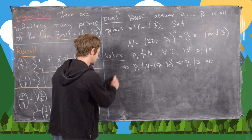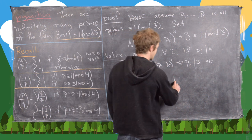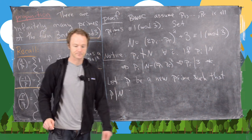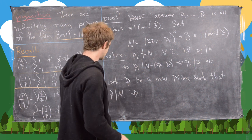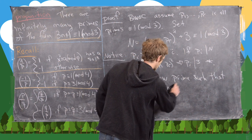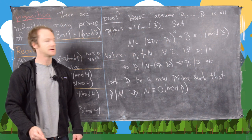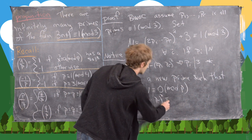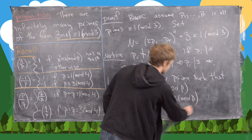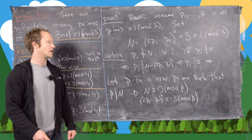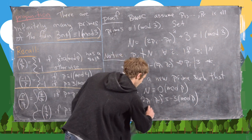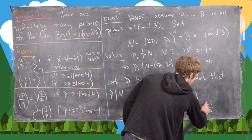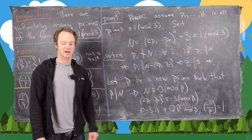Let p be a new prime — we don't know its type yet — such that p divides N. Then N is congruent to 0 mod p, which means 2p1·...·pr squared is congruent to negative 3 mod p. This tells us that negative 3 is a quadratic residue mod p; in other words, the Legendre symbol negative 3 by p equals 1. That's going to be the source of our next argument.